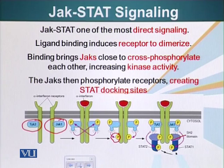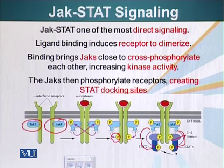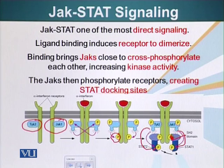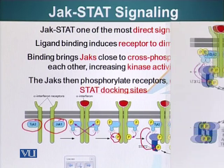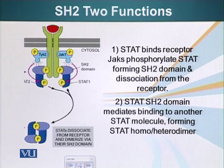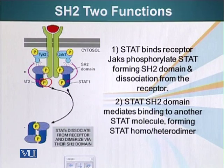This brings STATs in close vicinity of JAKs, or TYK2 in this case. They also phosphorylate STATs at special residues, again generating phosphorylated tyrosine residues. The STAT molecule's SH2 domain can bind a phosphorylated tyrosine. So when STAT molecules are phosphorylated by JAKs, they dissociate from the receptor and they dimerize, since they both have an SH2 domain and a domain to which the SH2 domain can bind.